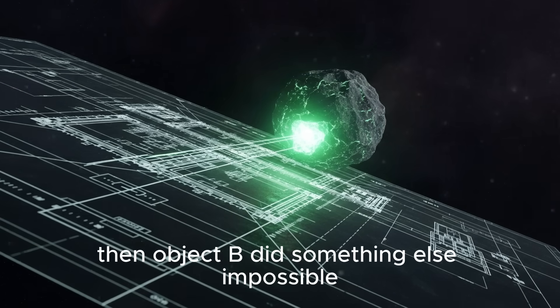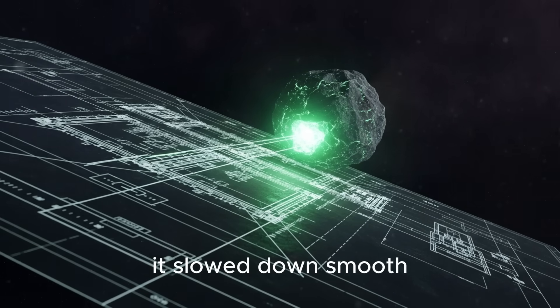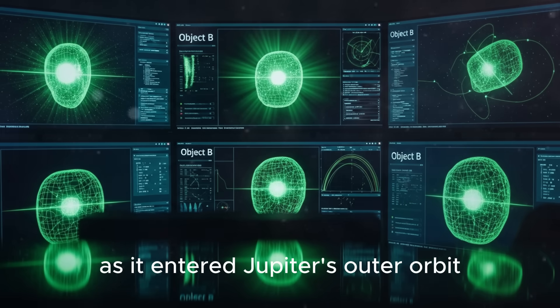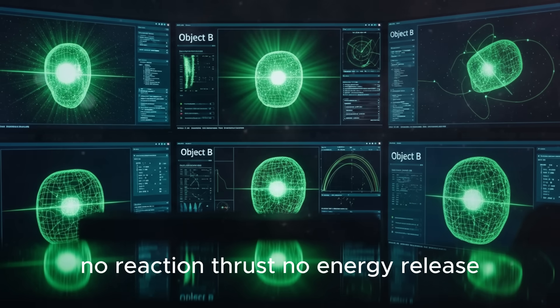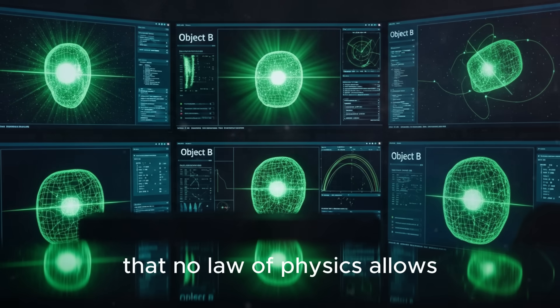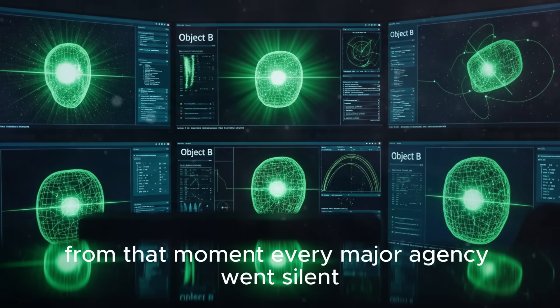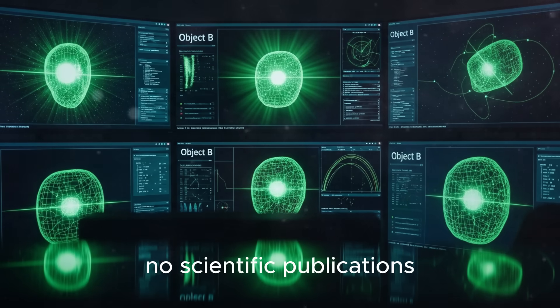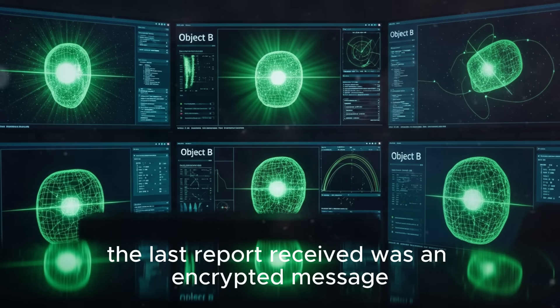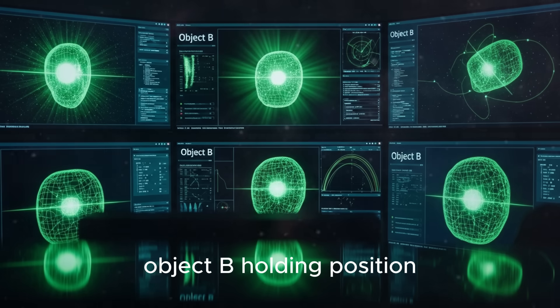Then Object B did something else impossible. Traveling at millions of miles per hour, it slowed down - smooth, steady deceleration occurring precisely as it entered Jupiter's outer orbit. No reaction thrust, no energy release, just perfect deceleration that no law of physics allows. From that moment, every major agency went silent. The last report received was an encrypted message: Object B holding position. No further movement detected. Awaiting instructions.